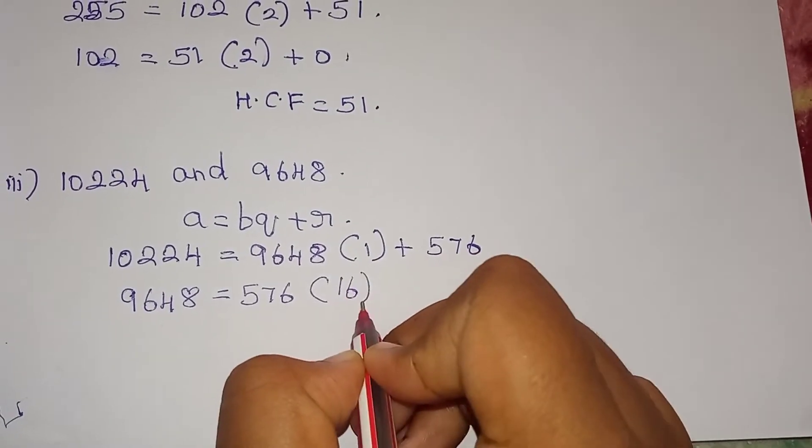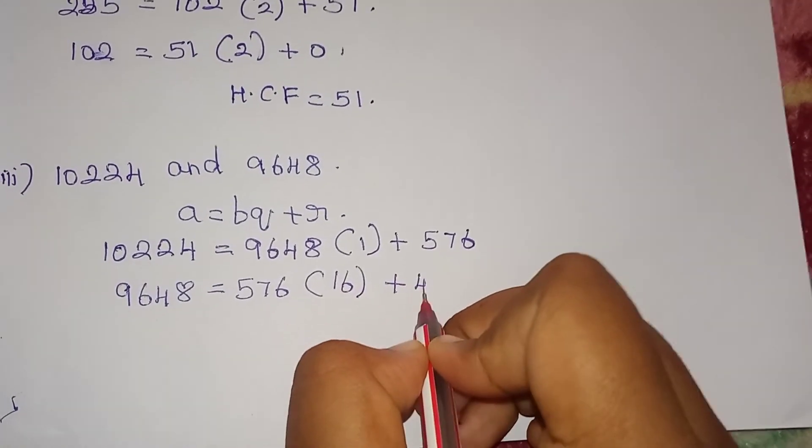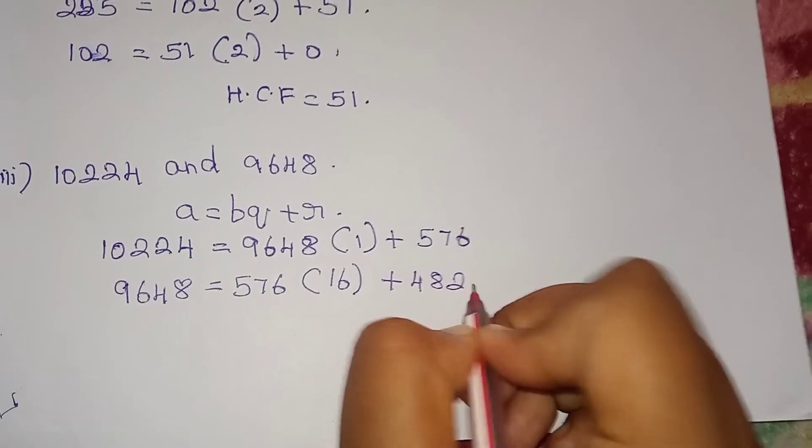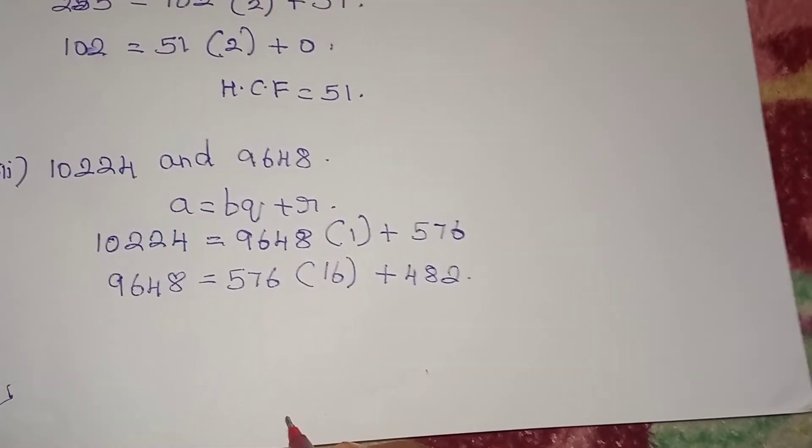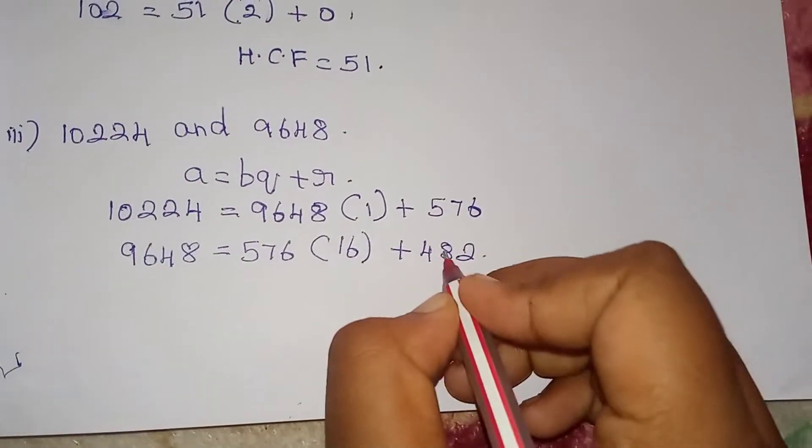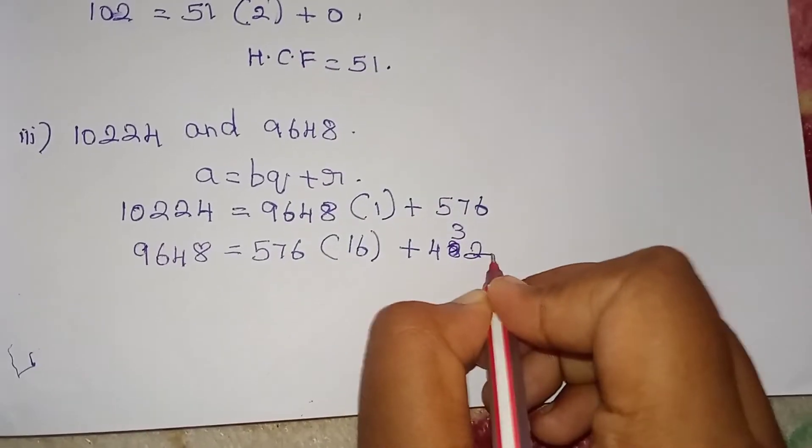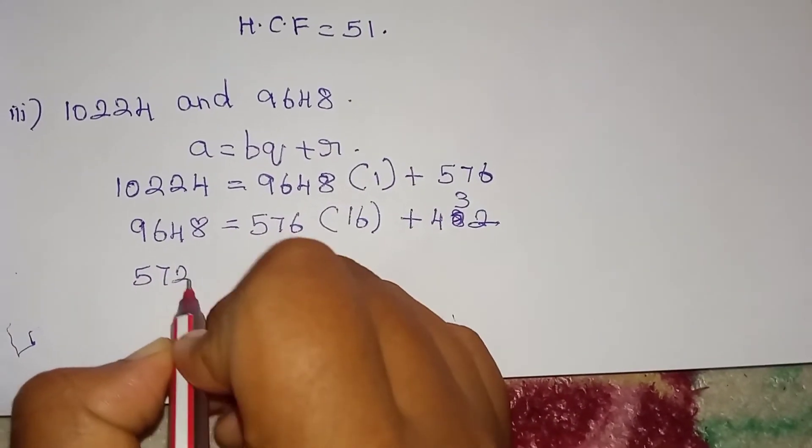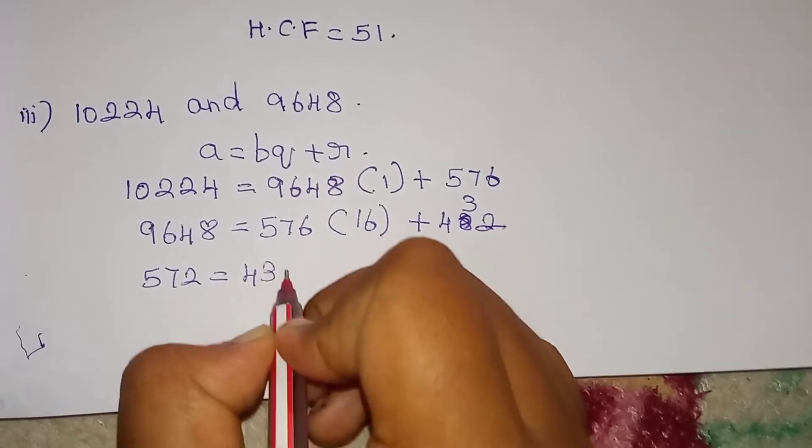576 times 16 equals 432, remainder 144. 576 is equal to 432 times 1 plus 144.